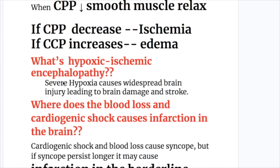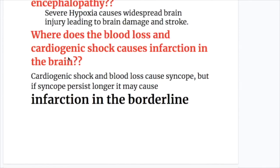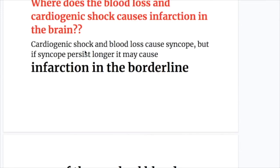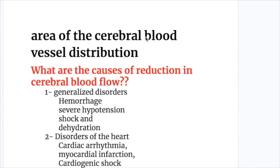What is hypoxic ischemic encephalopathy? Severe hypoxia causes widespread brain injury, leading to brain damage and stroke. Cardiogenic shock and blood loss cause syncope, but if syncope persists longer, it may cause infarction in the borderline area of the cerebral blood vessel distribution.